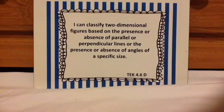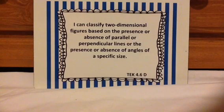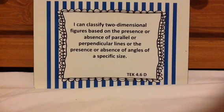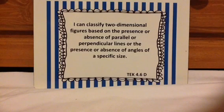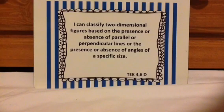Hi scholars. We're going to look at TEKS 4.6d. It says: I can classify two-dimensional figures based on the presence or absence of parallel or perpendicular lines, or the presence or absence of angles of a specific size. I'm going to do a brief review of parallel and perpendicular lines and the types of angles, but I strongly suggest that you go back and watch my video about learning about the different types of lines and angles in detail.